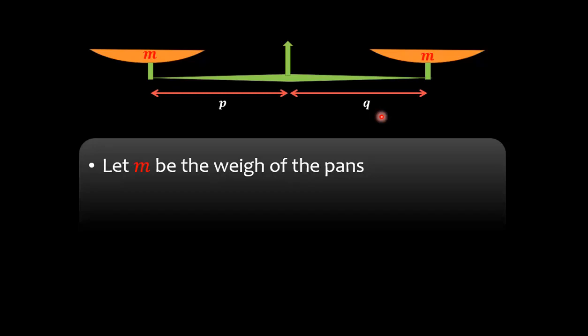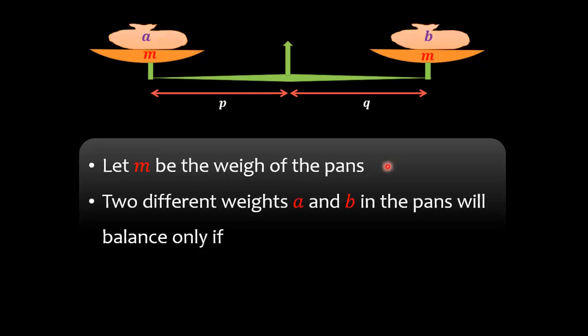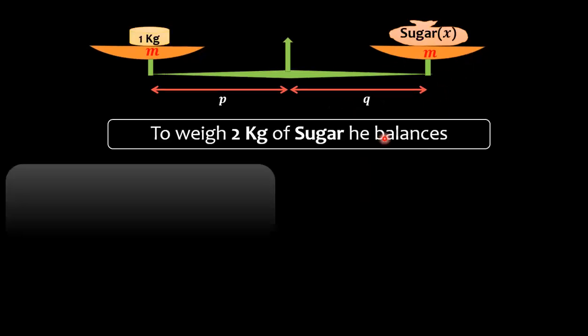While measuring the weights A and B, he can balance these two weights A and B only if length of arm p into A plus M equals length of arm q into B plus M.